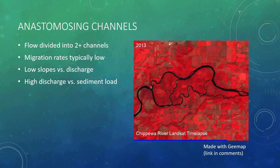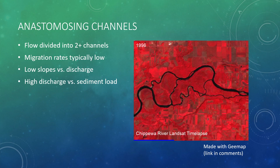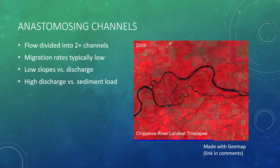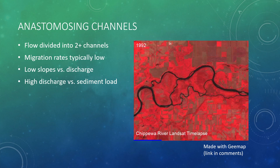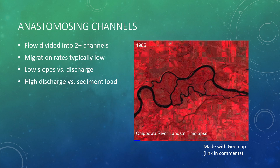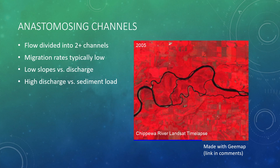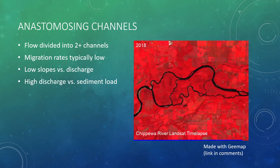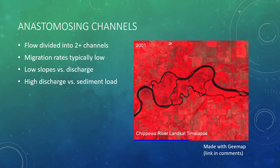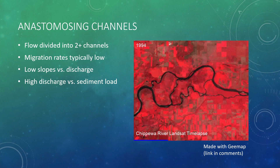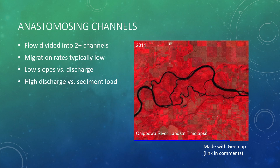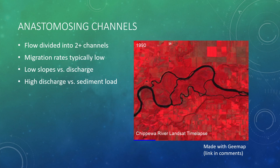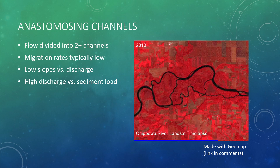Anastomosing channels are a little bit different. They're multi-channel features that are relatively static, typically characterized by low slopes relative to their discharge rates and high discharge relative to their sediment loads. Anastomosing channels can have braided, meandering, or straight reaches within them. The GIF on the right is from the Chippewa River in Wisconsin. Over the 36-year time span, this anastomosing reach is nearly unchanged. However, we can clearly see that there are meandering channels comprising the overall extent of the reach.